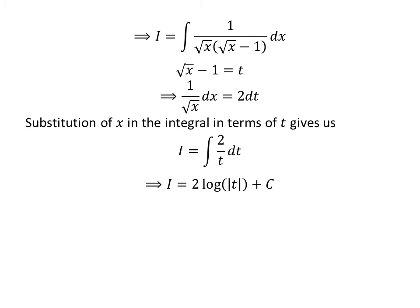We know the integral of 1 upon t is the natural log of the absolute value of t. The card appearing in the upper right corner of this video contains the link to the video on how to find the integral of 1 upon x. The link is also given in the description section. So i is equal to 2 times natural log of the absolute value of t plus capital C.